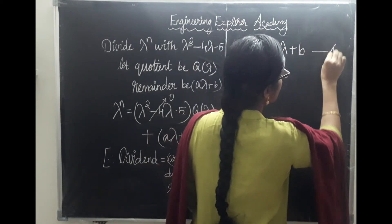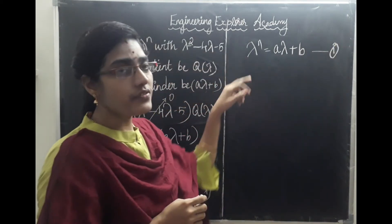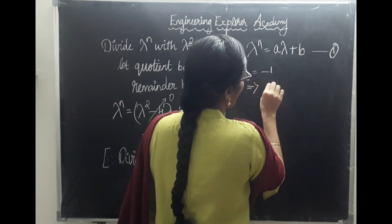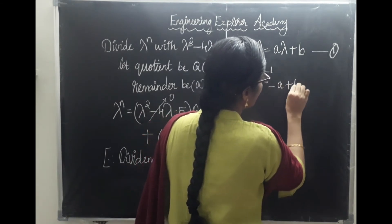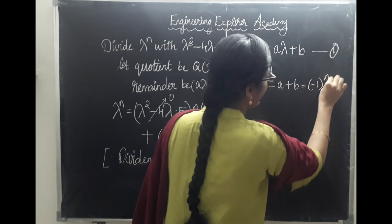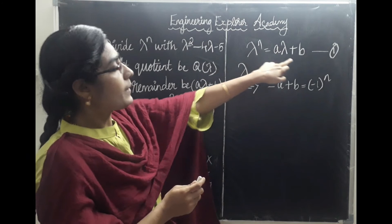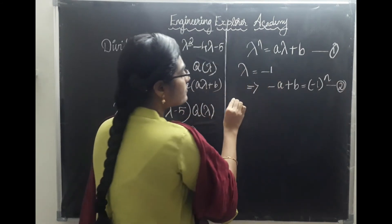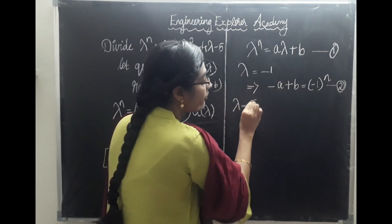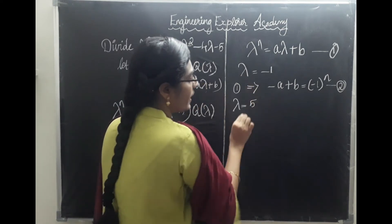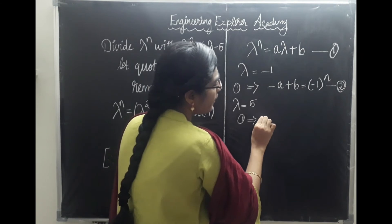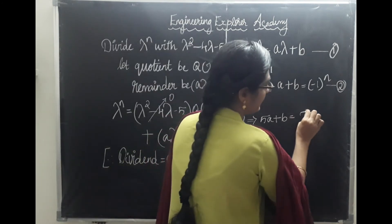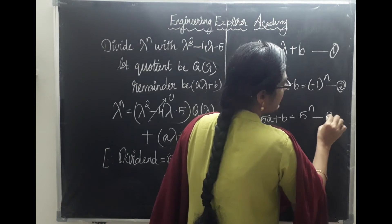Consider this as equation 1. Now substitute lambda equals minus 1 into equation 1: we get minus A plus B equals (minus 1) power N. Consider this as equation 2. Now substitute lambda equals 5: we get 5A plus B equals 5 power N. Consider this as equation 3.